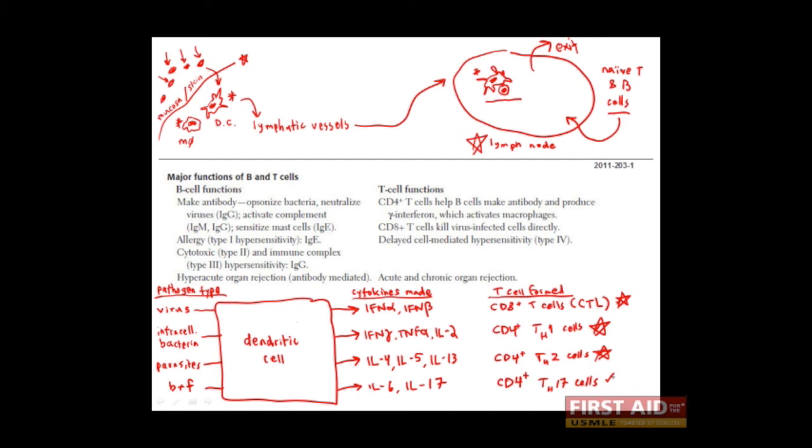Finally, CD4 positive TH17 cells also help activate B cells to produce antibodies against extracellular bacteria and fungus. They also help to recruit neutrophils to the site of infection. Neutrophils, of course, can begin phagocytosing bacteria and fungus and can also release on those pathogens destructive enzymes.